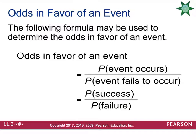Odds in favor of an event: to determine odds in favor of an event, you simply flip-flop the formula and take the probability that the event does happen divided by the probability the event fails to happen.